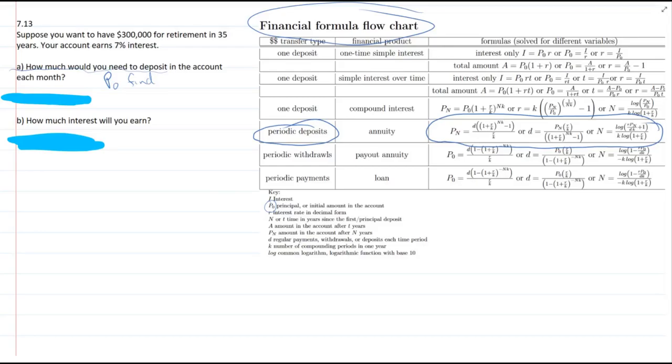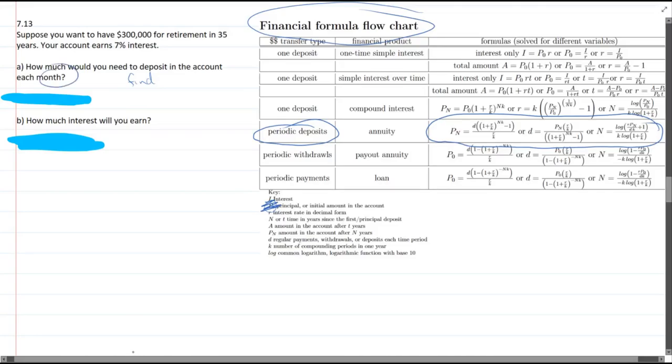That's deposit each month, not initially. That's why there's no P0. That is a deposit, but that's only when you have an initial deposit and no periodic deposits. What we want to do is deposit each month. So that is D, regular payments, withdrawals or deposits each period. So we want to find D. Right away, we want to use this second formula right here.